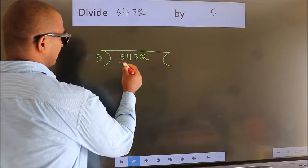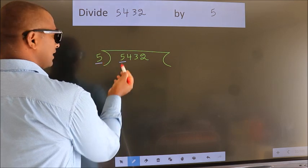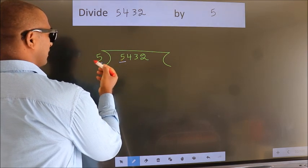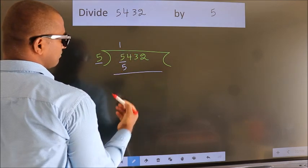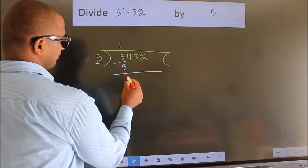Here we have 5. Here 5. When do we get 5? In 5 table. 5 once, 5. Now we should subtract. We get 0.